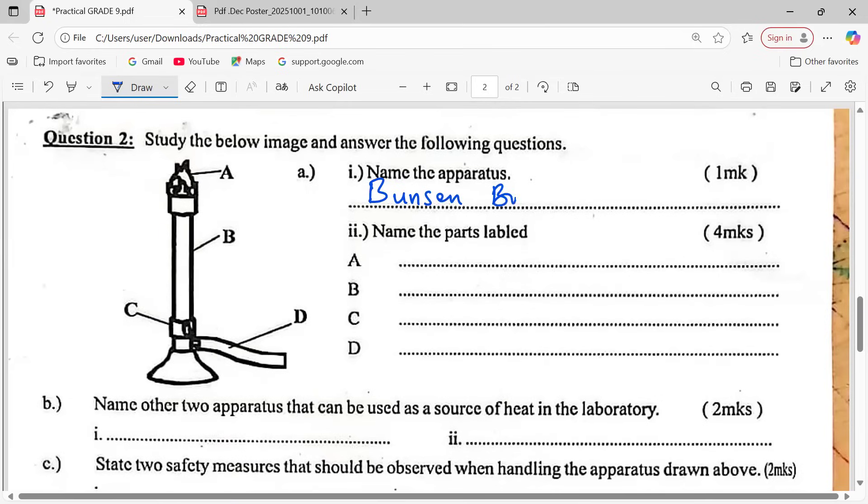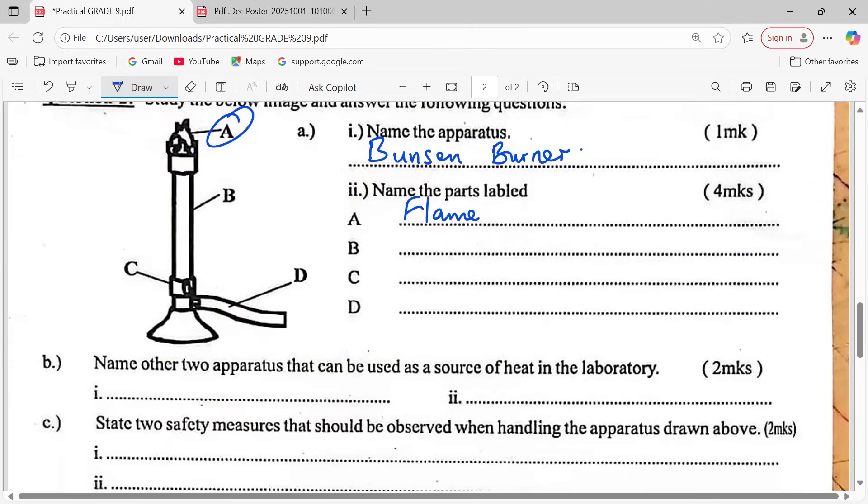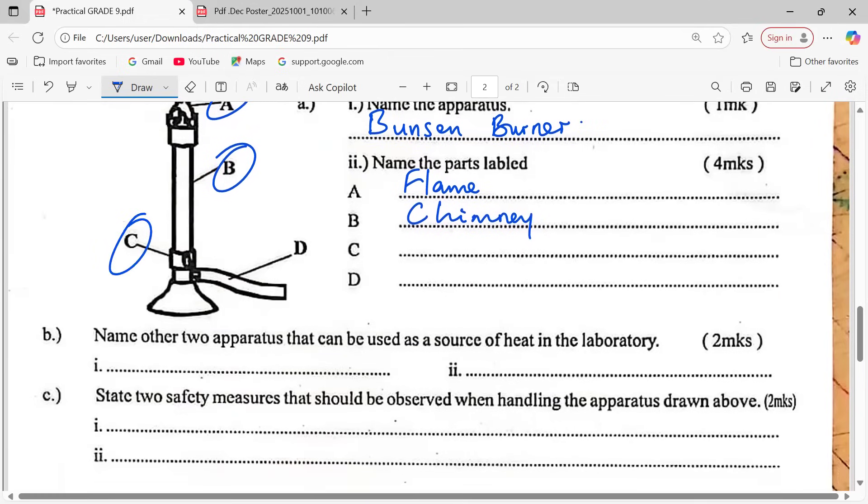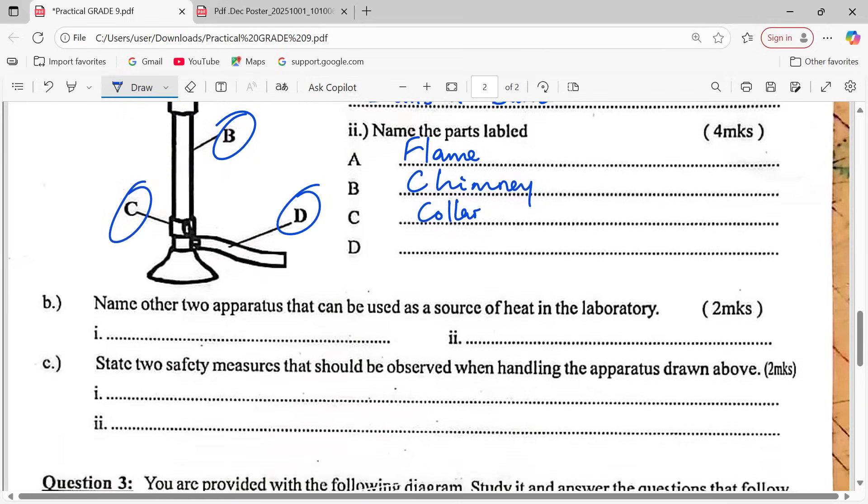It has some parts whereby part A, this one is the flame itself. Then we have a part B here which is the chimney. Then we have part C here, part C is called the collar. Then we have part D which is the gas inlet.